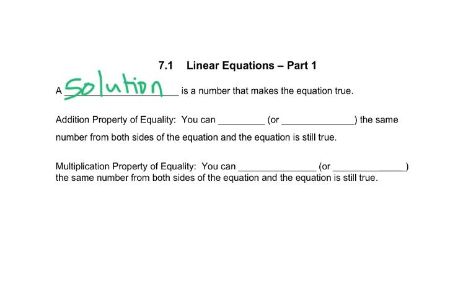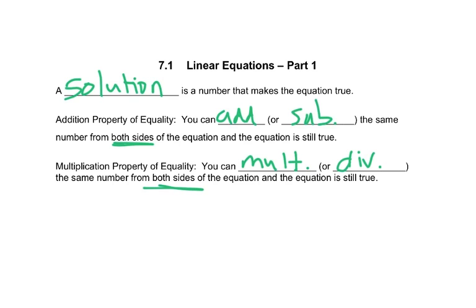We solve equations primarily by using two different properties. The addition property of equality says that you can add or subtract the same number from both sides of the equation and it keeps the equation true. The multiplication property of equality says that we can multiply or divide the same number on both sides and the equation is still true. So the key is that we have to do something on both sides. We can add, subtract, multiply, and divide.